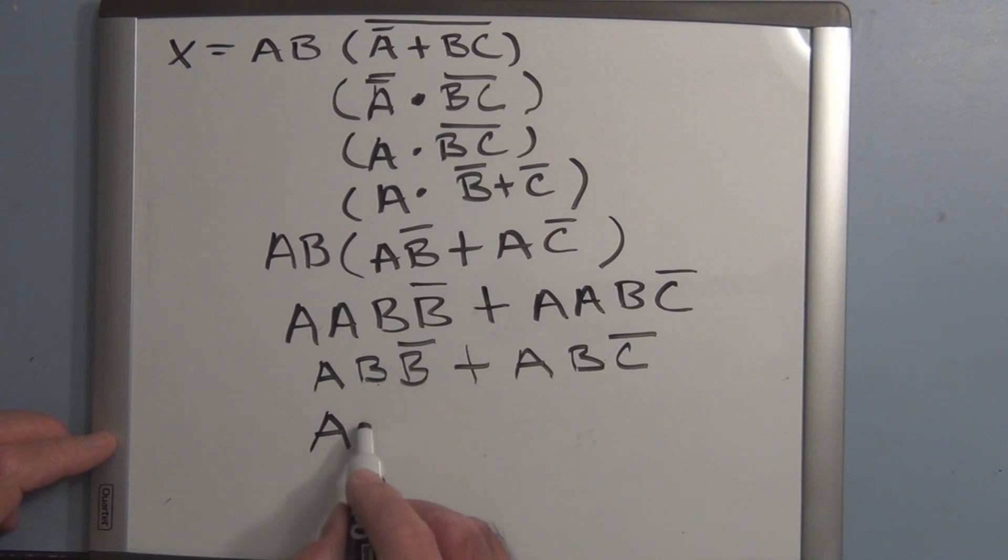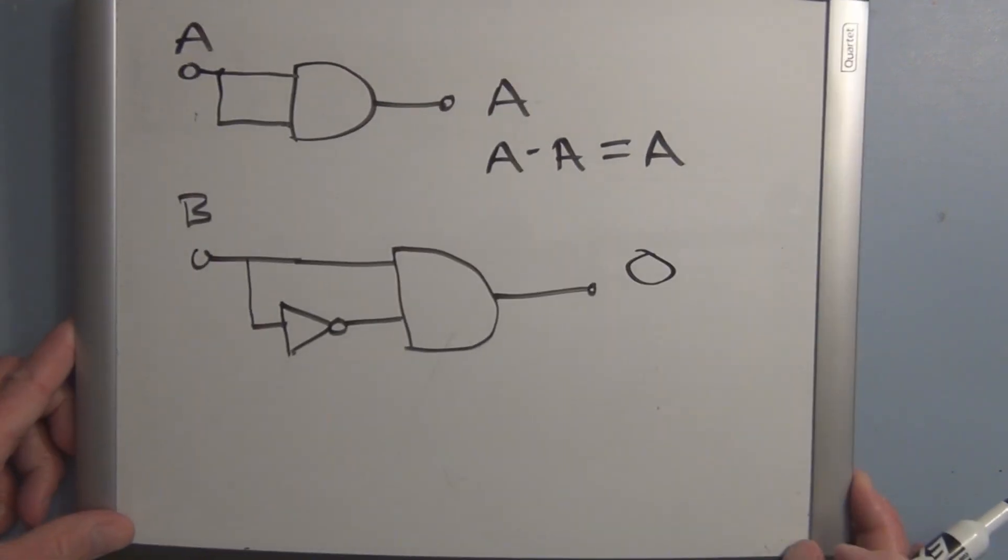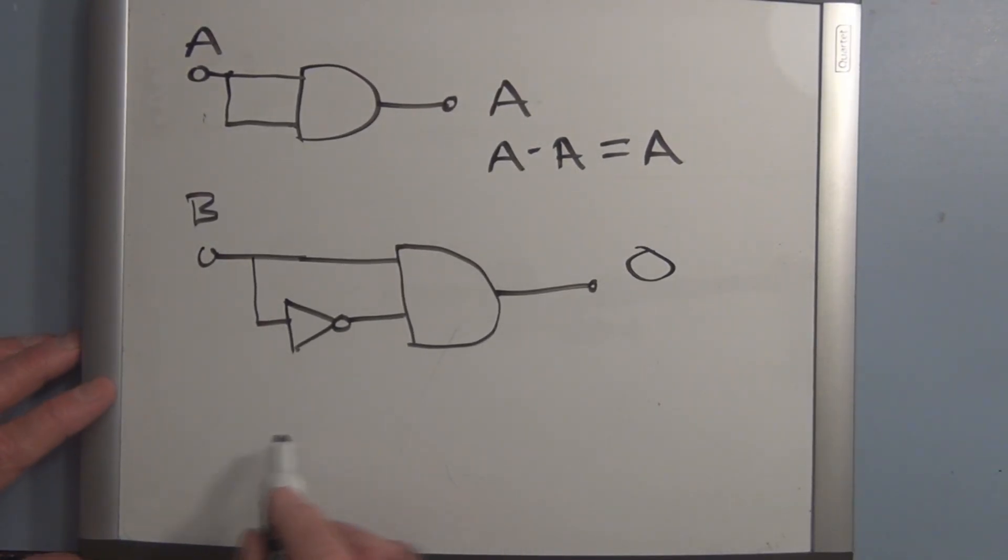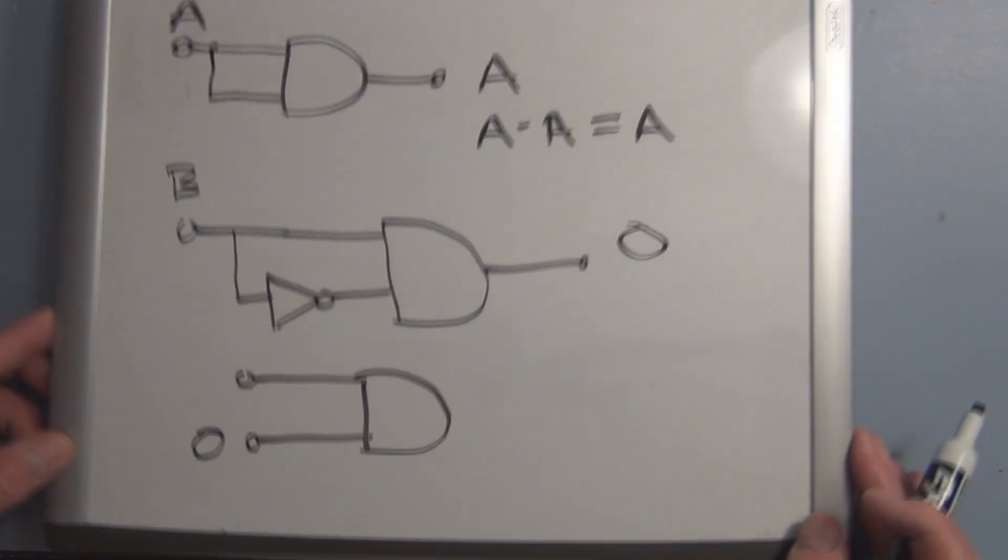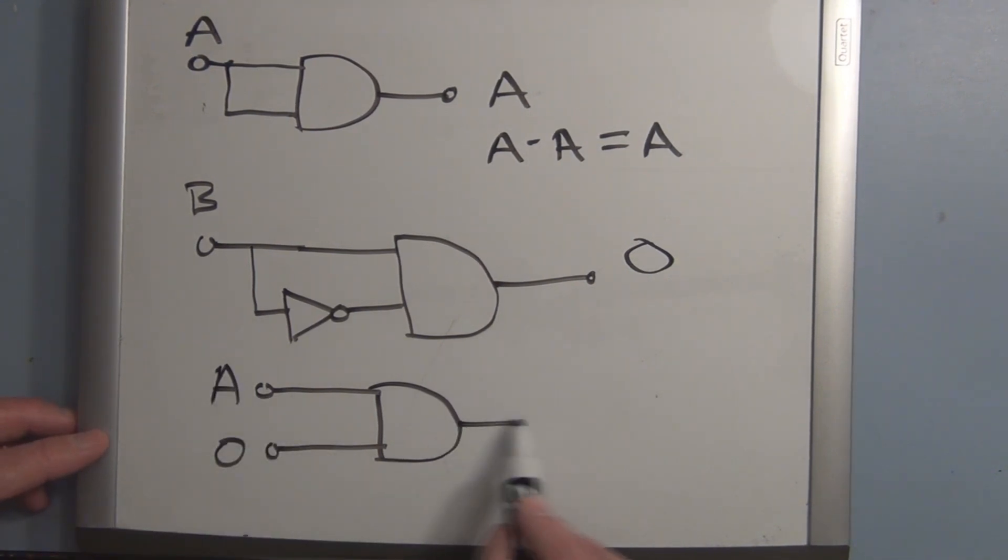So this is A ANDed with a constant 0. Now this is where you might start thinking about ordinary algebra. This is a constant logic level 0 that you're ANDing with a variable that has a possibility of being a 0 or a 1. Well, we know that another example here is if we have an AND gate and we tie one of the inputs to 0 and this is the input A, that no matter what A is, because we've tied one of the inputs to 0, this output will always be 0.